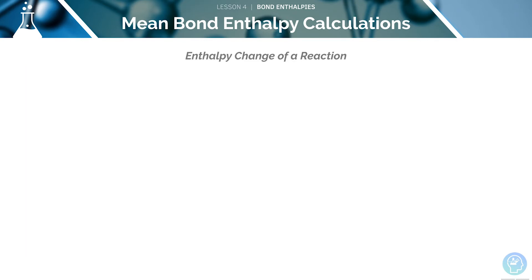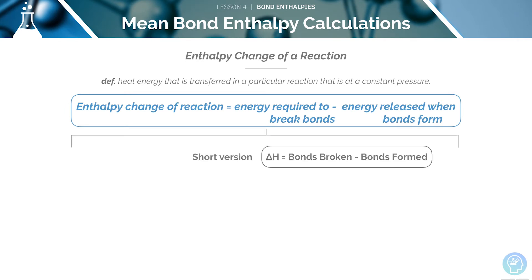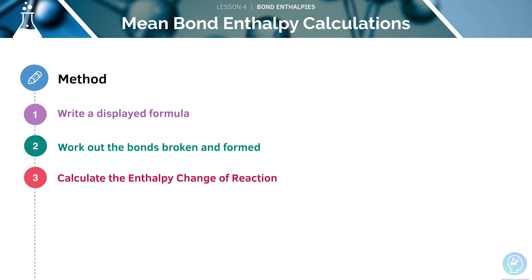We can use the following equation to calculate an approximate value of delta H from mean bond enthalpies. It is defined as the heat energy transformed in a particular reaction at constant pressure. The equation is: energy required to break bonds minus the energy released when bonds form. Here is the short version acceptable to use in AQA exams, along with the units. The method is: first, write out the displayed formula; then work out the bonds broken and formed; and finally, calculate the enthalpy change of the reaction.